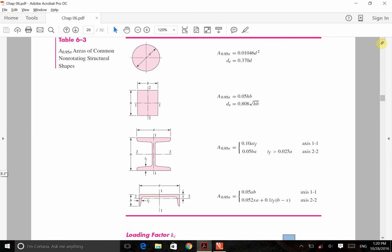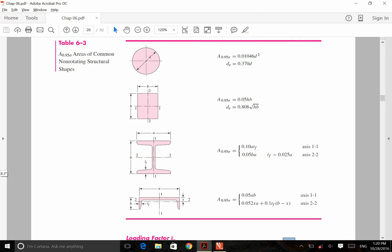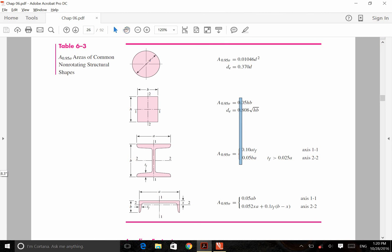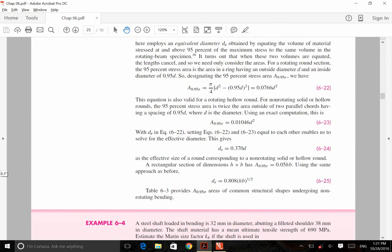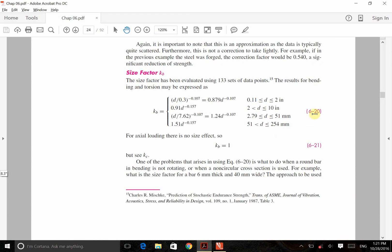This table, table 6-3, gives us equivalency based on diameter. So if we have a shaft, and if it's not rotating, we need to find DE based on this one. And if there is a rectangular cross-section, or I-shaped cross-section, or something like this, which is like the web of a T-beam, we need to use these equations. Once we get DE, we need to go to the equation number 6-20. So based on the diameter, so this is our DE in this point.